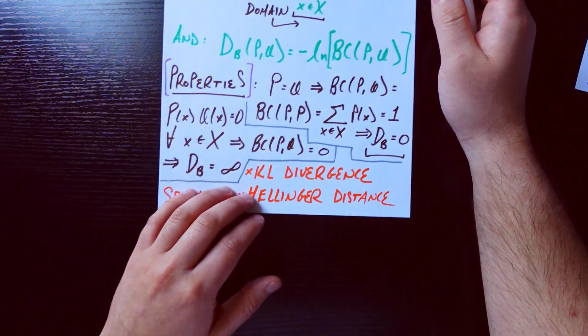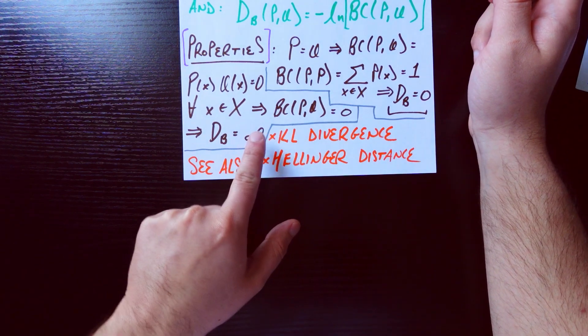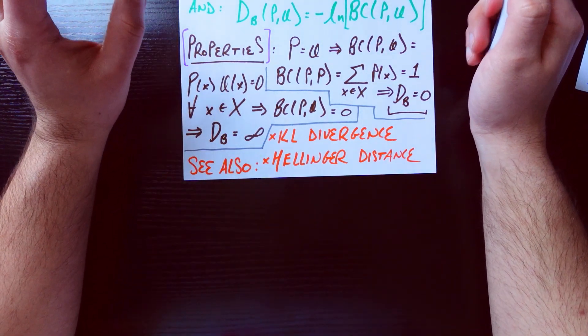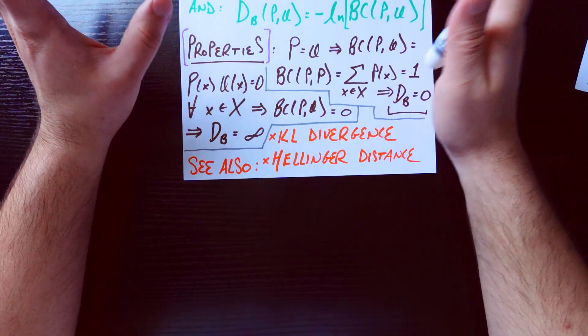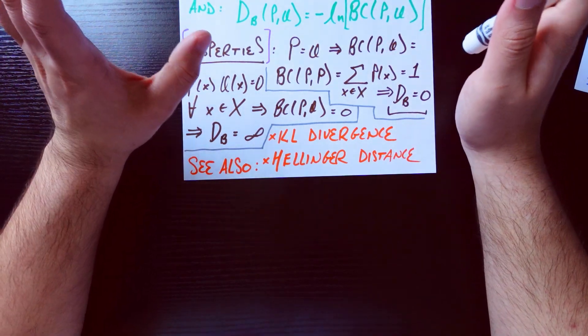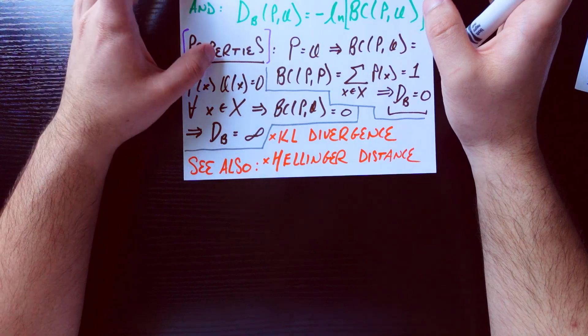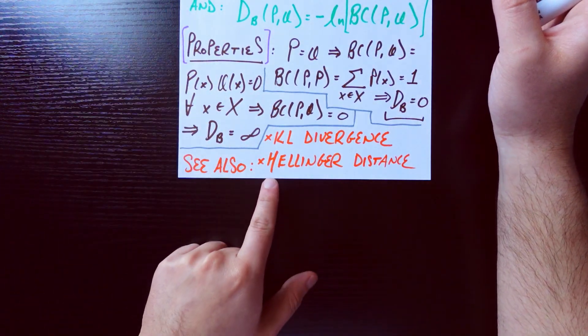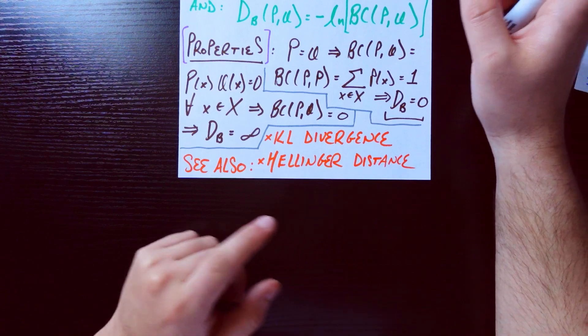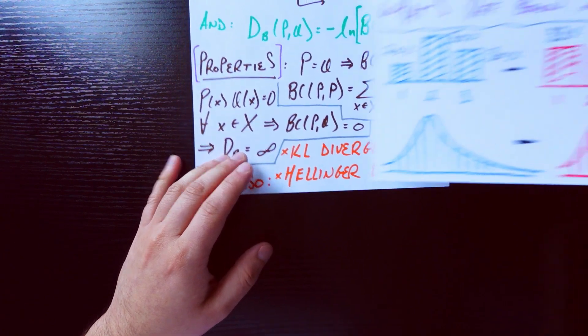And so I'll just name drop some of the other big ones here. KL divergence is a big one too. I chose not to talk about it in this video because it's a little bit more complex—dives into information theory a little bit—but I would encourage you to research on your own, or if you want me to make a video, any comments are welcome. Hellinger distance is also one that shows up a lot.